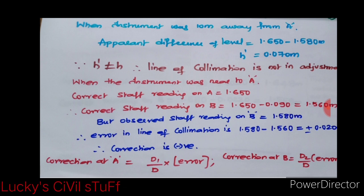Coming to the correction at A, d1 by d into error, and correction at B will be d2 by d into error. In the next slide, we will be coming across what is d1 and d2 and d.